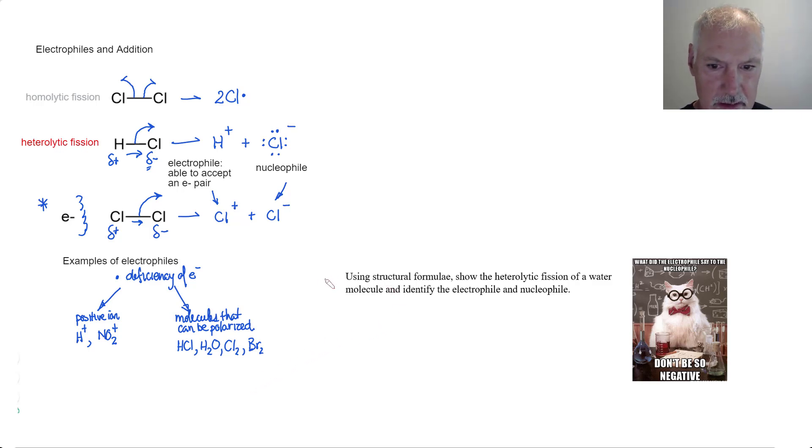Let's pause for a moment and take a look at this sample question. Using structural formulas, show the heterolytic fission of water. Identify the electrophile and the nucleophile. So let's start with our structural formula of the water molecule. In heterolytic fission, both of the electrons in the bond are going to move. And in this case, they'll move to oxygen because it has a greater electronegativity. That's then going to leave the hydrogen deficient in electrons. It would now be hydrogen with a positive charge and the remaining OH combination would now possess a negative charge. So my electrophile would be this and our nucleophile would be this.